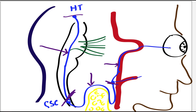Localization of Horner syndrome is very simple. You have to think about the neighbors of the sympathetic tract in different locations. If there is a first order neuron problem, we call it a central Horner syndrome. If the second order neuron is involved, we call it a preganglionic Horner syndrome. And if the third order neuron is involved, we call it a postganglionic Horner syndrome.